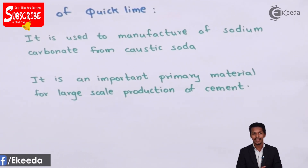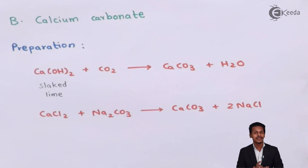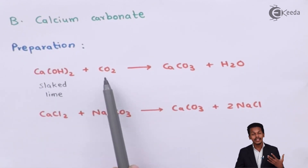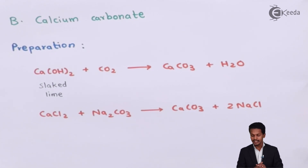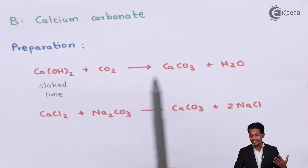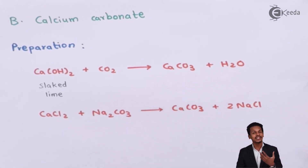Now let us move to the next compound — calcium carbonate. We will discuss the methods to prepare it, its properties, and its uses. One preparation method: when Ca(OH)2 (calcium hydroxide, or slaked lime) is treated with carbon dioxide, the product we get is CaCO3 plus H2O. We must take precautions: if excess CO2 is added during the formation of calcium carbonate from slaked lime, the product can become soluble. We know CaCO3 found in chalk is insoluble in water.